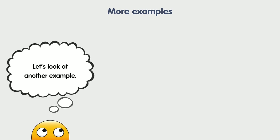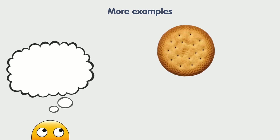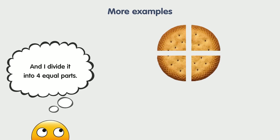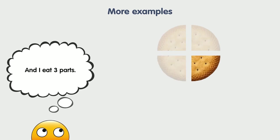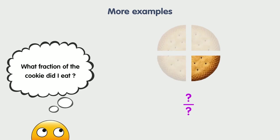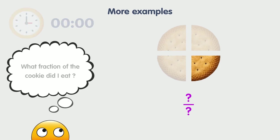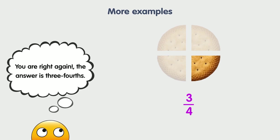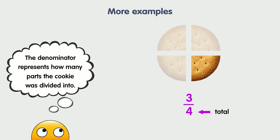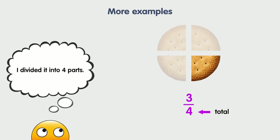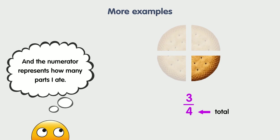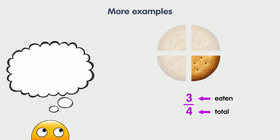Let's look at another example. Suppose I have this cookie and I divide it into four equal parts, and I eat three parts. What fraction of the cookie did I eat? You are right again — the answer is three fourths. The denominator represents how many parts the cookie was divided into: four parts. And the numerator represents how many parts I ate: three parts.